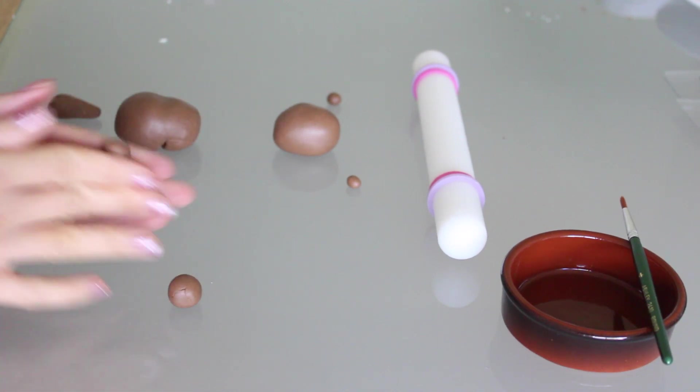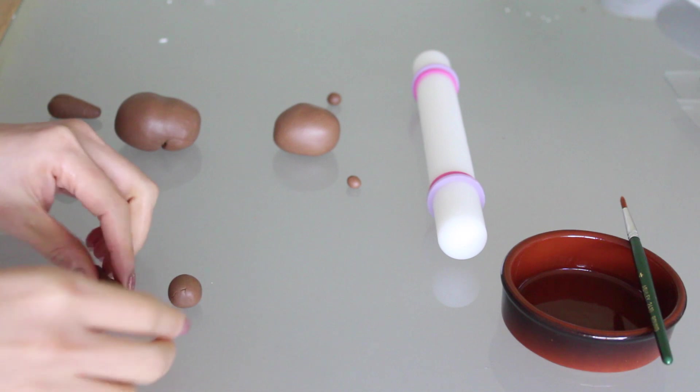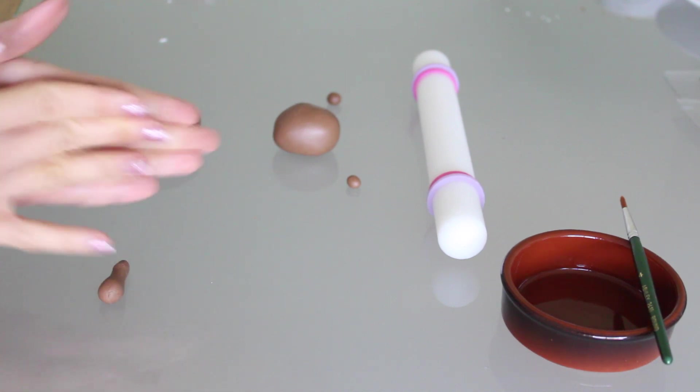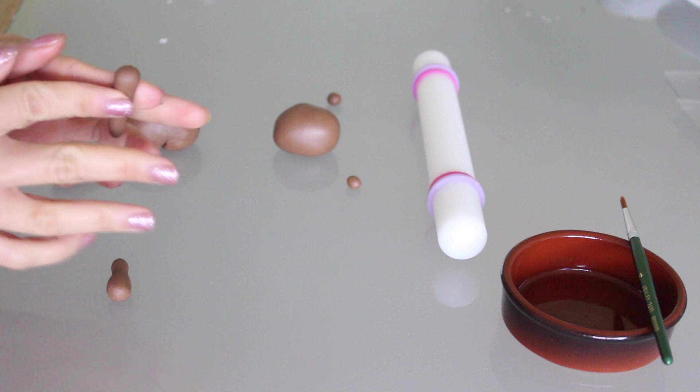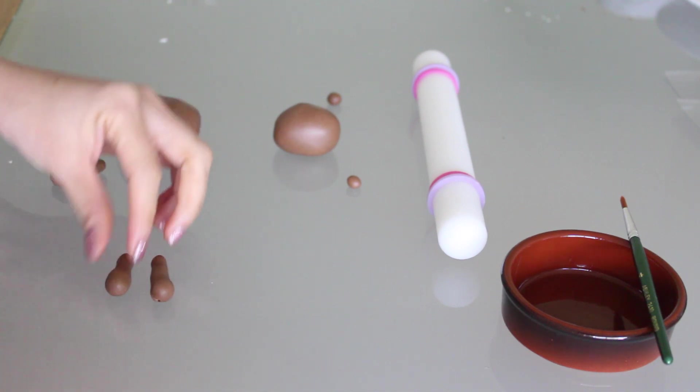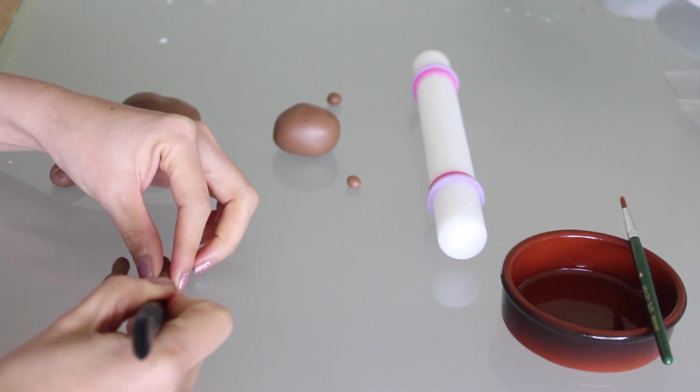Now it's time to move on to the arms, or the front legs, if you want to be precise. Roll them into slender cones like so. Then use the fondant knife to create the hoofs like before.